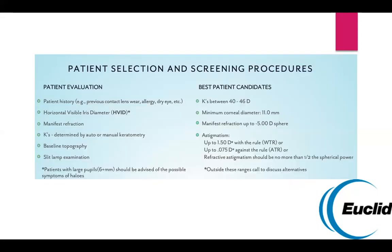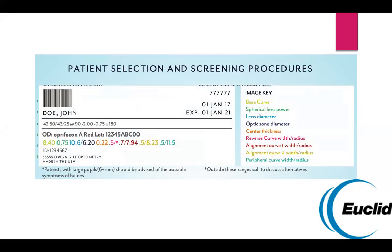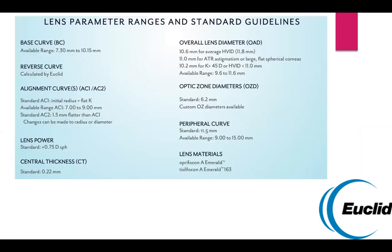The best candidates for orthokeratology are patients with K readings between 40 and 46, minimum corneal diameters of 11 mm, and up to 5 diopters of myopia for full correction. For astigmatism, up to 1.5 diopters with-the-rule or up to 0.75 diopters against-the-rule is acceptable, and the astigmatism should be less than half of the spherical power. When you receive a lens, you get all the parameters so you can understand what you're getting.